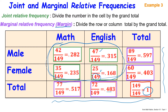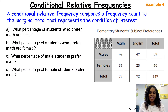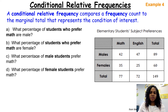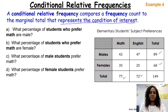Joint relative frequency is on the inside of the table and marginal is on the outside — think about the margin of your paper. Now let's look at conditional relative frequencies. The root word is 'condition,' so the data must meet certain conditions. Conditional relative frequency compares a frequency count to the marginal total that represents the condition of interest. Depending on what the question asks, we will divide by 89, 60, 77, or 72.